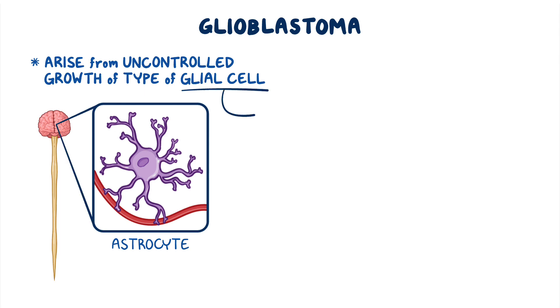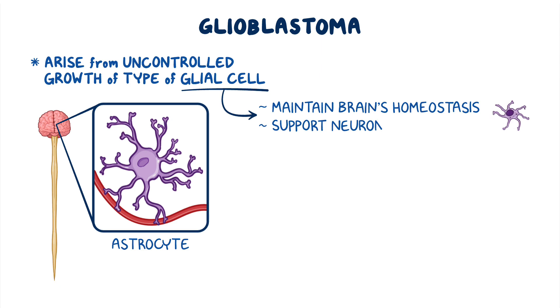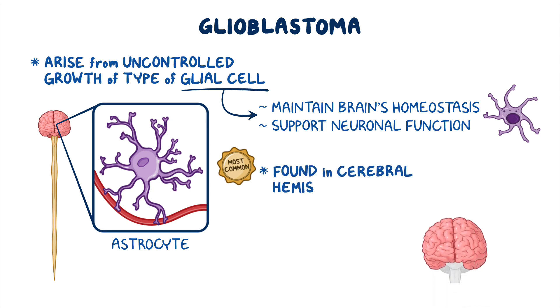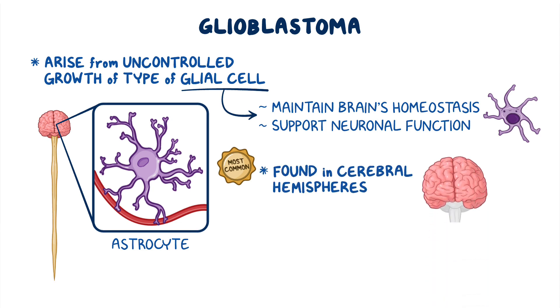Glial cells help maintain the brain's homeostasis and support neuronal function. Glioblastomas can be found throughout the brain and spinal cord, but are most commonly found in the cerebral hemispheres.